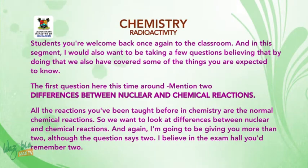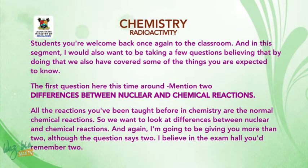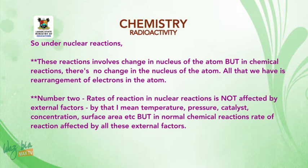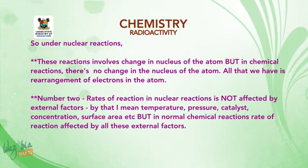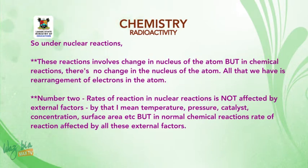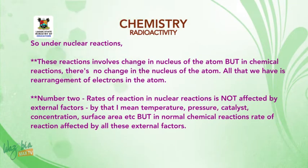I'm going to give you more than two, although the question says two. Under nuclear reactions, these reactions involve change in the nucleus of the atom. But in chemical reactions, there is no change in the nucleus of the atom — all that we have is rearrangement of electrons in the atom.